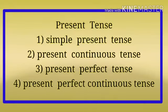Present Tense has four sub-types: Simple Present Tense, Present Continuous Tense, Present Perfect Tense, and Present Perfect Continuous Tense — meaning Sada Vartamankal, Apurn Vartamankal, Purn Vartamankal, and Purn Apurn Vartamankal.